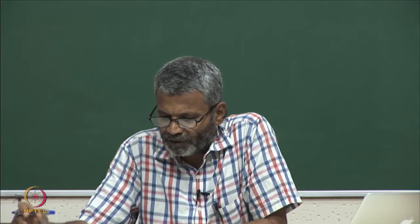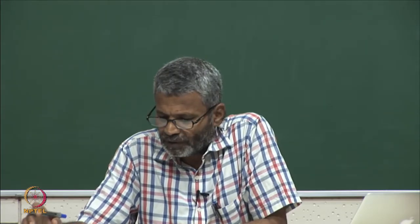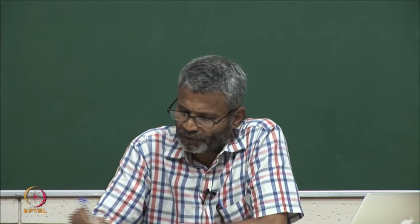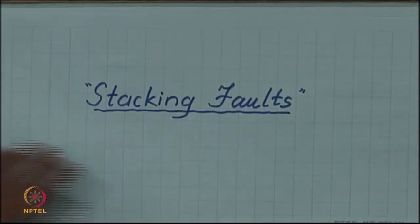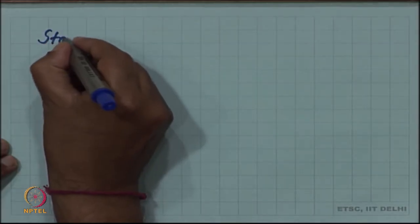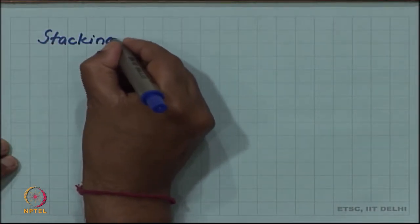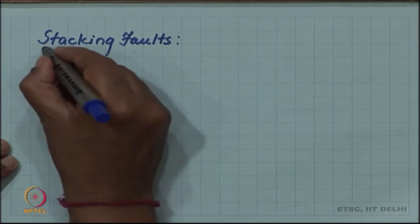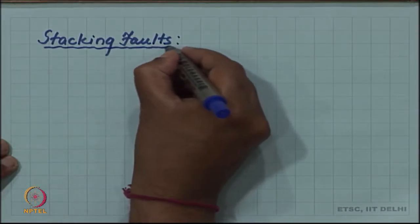We are discussing various kinds of crystal defects. We have already discussed line and point defects, and currently we have been discussing surface defects. In the classification scheme of surface defects, one of the surface defects is a stacking fault, which is what we take up today. A stacking fault, as the name suggests, is a fault in the stacking sequence of a crystal.